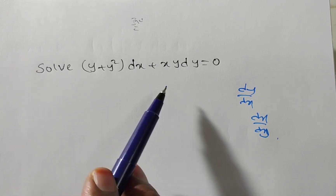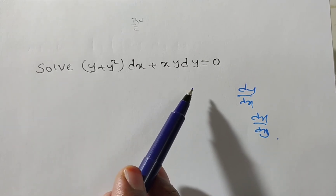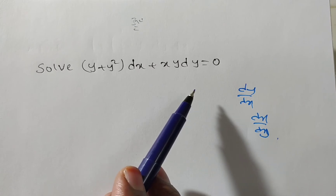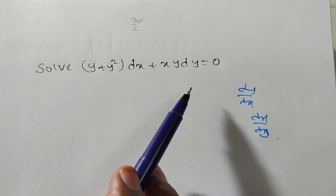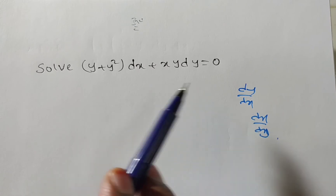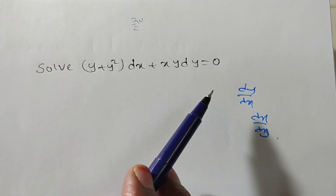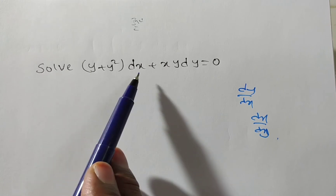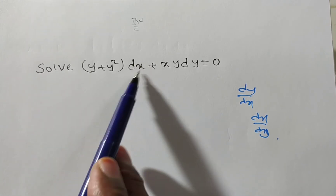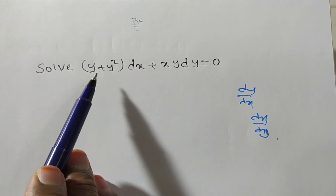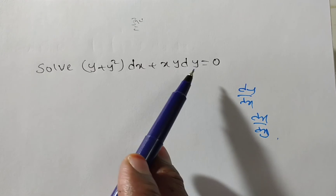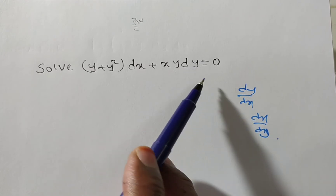To solve the first order first degree differential equation, the first method is variables separable. In this method, we have to separate the dx and x terms to one side, and the dy and y terms to another side.